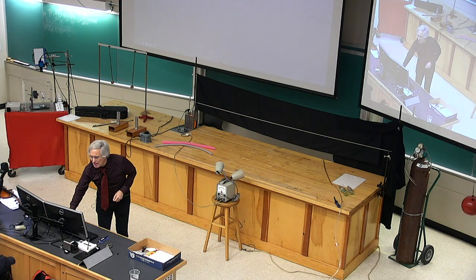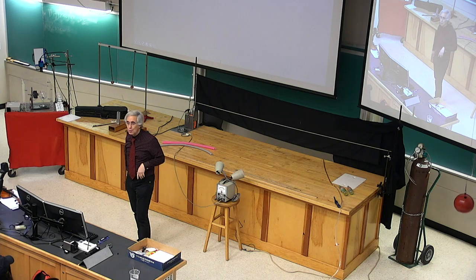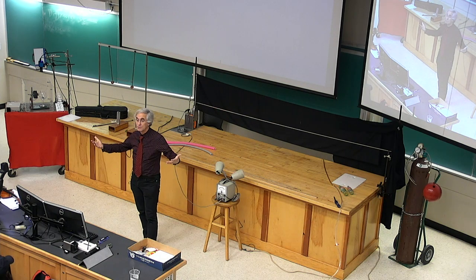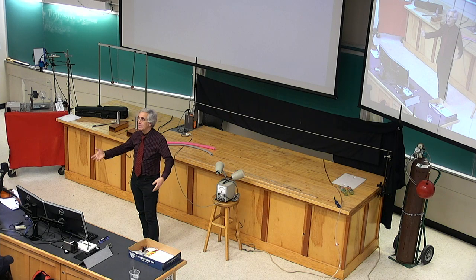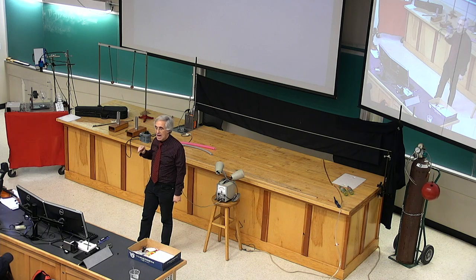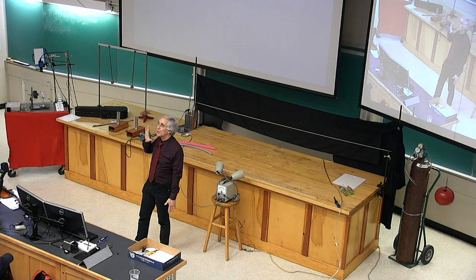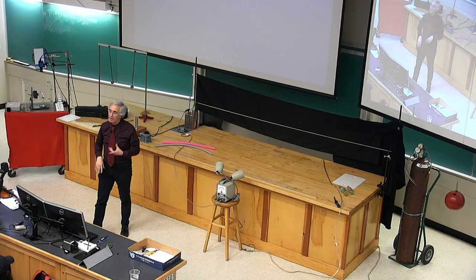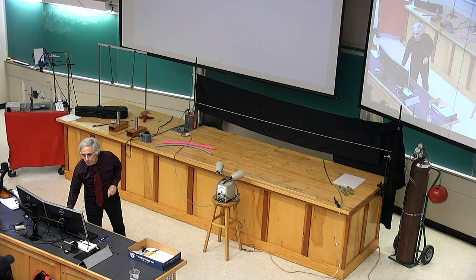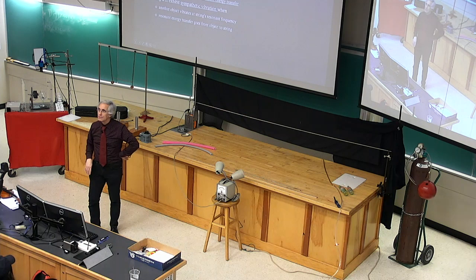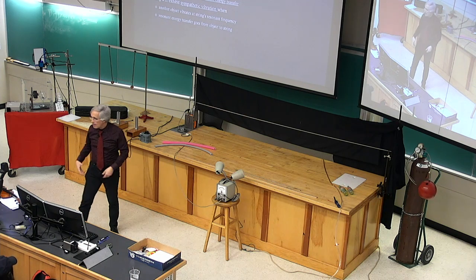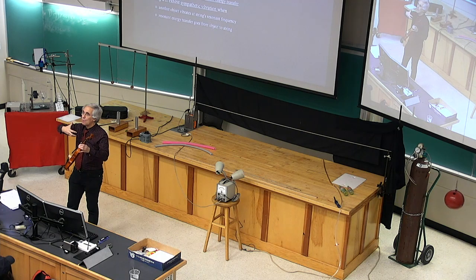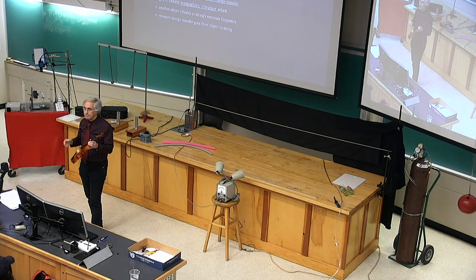This brings up the question of how do you get the string going. To get a pendulum swinging vigorously by giving it a series of small pushes, you should push it when it's moving away from you — that's how you add energy. You can get a string vibrating in two very different ways: you can pluck it — pull it away from center, do a lot of work on it at once, and then let it rip — or you can rhythmically push it in sync with its own motion.